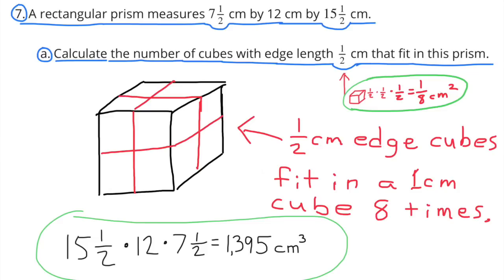Number 7: A rectangular prism measures 7.5 centimeters by 12 centimeters by 15.5 centimeters. Part A: Calculate the number of cubes with edge length 0.5 centimeters that fit in this prism. I've drawn a cube that is 1 centimeter by 1 centimeter by 1 centimeter, and I see that these half-centimeter edge cubes can fit inside it 8 times.